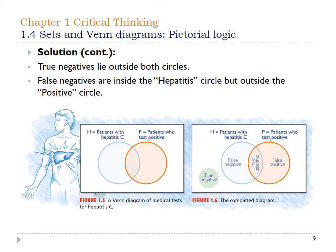People who have hepatitis C are in the blue circle, and patients who tested positive are in the orange circle. The overlap is the true positives, and you can also identify the false negatives and false positives. The true negatives — people who don't have hepatitis C and who test negative — would be all the people on the outside edge. Don't take the size of the circles to mean the exact percentage of false negatives and false positives; it's just a pictorial representation of the different cases that could possibly happen.